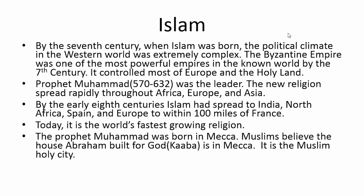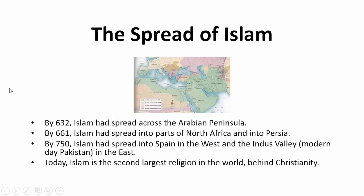Muhammad was born in Mecca. Muslims believe that the house Abraham built for God, called the Kaaba, is in Mecca, which is the Muslim holy city. By 632, Islam had spread across the Arabian Peninsula. By 661, it reached parts of North Africa and Persia. By 750, it extended all the way into Spain in the west and into the Indus Valley — modern-day Pakistan — in the east. Today Islam is the second largest religion in the world behind Christianity.